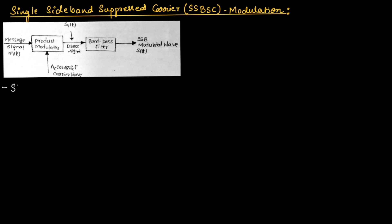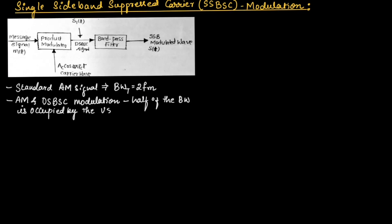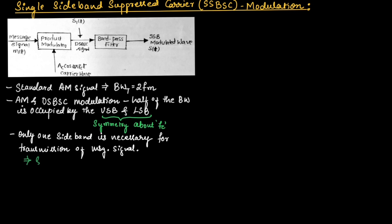If we consider a standard AM signal, it requires a transmitted bandwidth of 2FM. In both AM and DSBSC modulation, half of the transmitted bandwidth is occupied by the upper sideband and another half is occupied by the lower sideband. These upper and lower sidebands are symmetric about the carrier frequency FC. Hence, only one sideband is necessary for transmission of the message signal. When only one sideband is transmitted, the modulation is referred to as single sideband modulation.